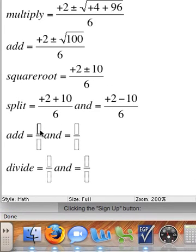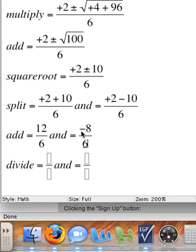Now if I add everything together, 2 plus 10 is 12. I'm still leaving the denominator 6 alone for now, I'll divide in the next step. And positive 2 minus 10 is negative 8 divided by 6.